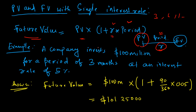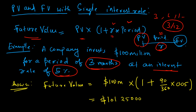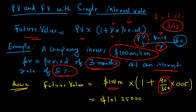For example, a company invests 100 million dollars for a period of three months at an interest rate of 5%. Three months means 3/12 of a year, or equivalently 90/360. The present value — the principal amount — is 100 million dollars, and the annual interest rate is 5%, or 0.05.